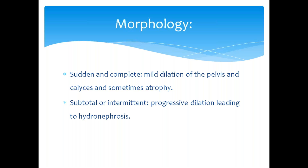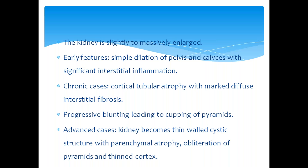In advanced cases, the kidney will be a thin-walled cystic structure with parenchymal atrophy, obliteration of pyramids, and thinned-out cortex. The kidney becomes a thin-walled cystic structure with parenchymal atrophy, obliteration of pyramids, and thinned-out cortex, leading to decreased GFR and finally cortical atrophy with progressive blunting and cupping of pyramids.